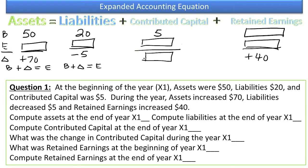Now let's read the question and see what it's actually asking for. Compute assets at the end of the year X1. Since we know the beginning to be $50, we know the change to be $70, therefore we know that the ending is $120. 50 went up by 70 to get to 120. Let's go ahead and put that number in here, 120.